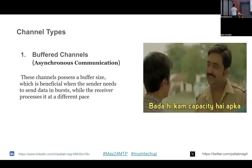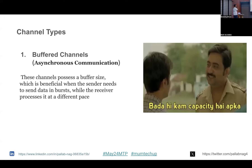Go gives us two kinds of channels. One is buffered channels, which we call an asynchronous mode of communication. These channels have a special buffered size and can hold the data. We call it asynchronous because in buffered channels the producer produces messages to the channel and the consumer consumes them at its own pace. For example, the producer may push messages in bursts — maybe 10 or 20 packets at a time — and the consumer can consume at its own pace. This is the buffered channel use case.